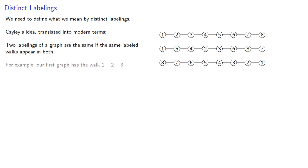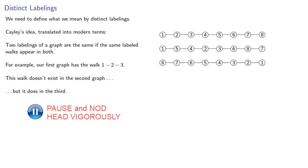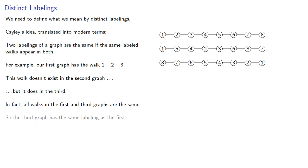For example, our first graph has the walk 1 to 2 to 3. This walk doesn't exist in the second graph, but it does in the third. In fact, all walks in the first and third graphs are the same, so the third graph has the same labeling as the first.